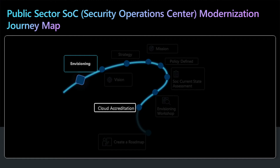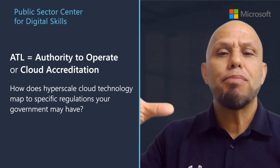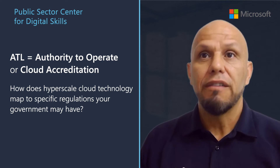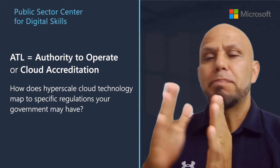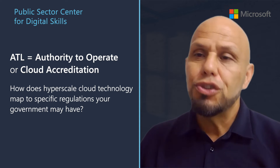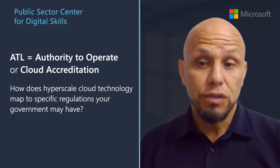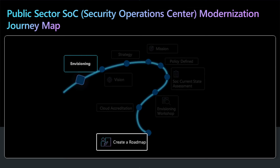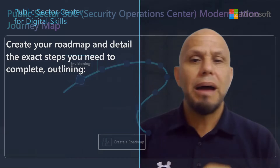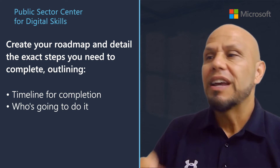Depending on the country or region you're in, you sometimes have to complete what we call an ATO — authority to operate — or cloud accreditation. This means looking at how hyperscale cloud technology for your SOC maps to specific regulations that a particular government may have, such as NIS2, FedRAMP, PBMM, or NHS. The last step in the envisioning phase is the creation of a roadmap, which details the exact steps you need to complete, when, who's going to do it, and how it's going to be done.